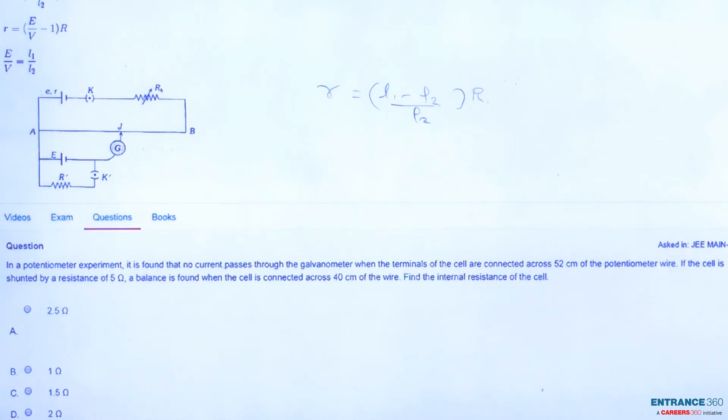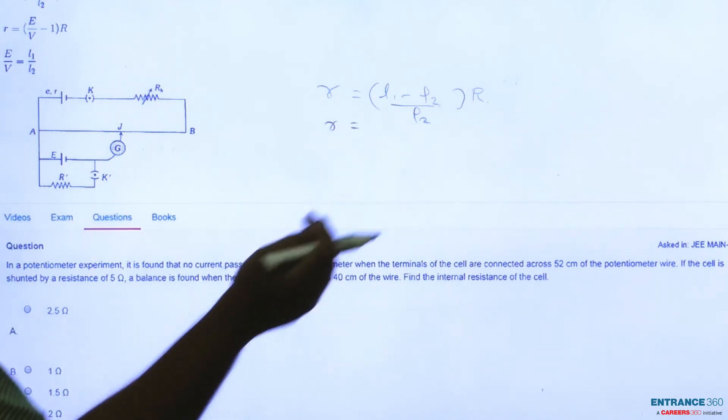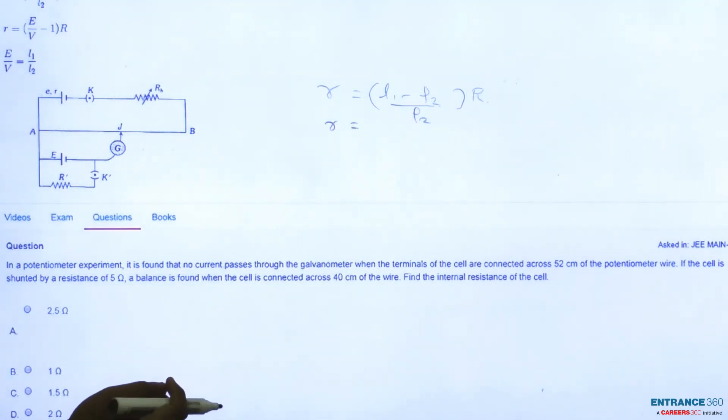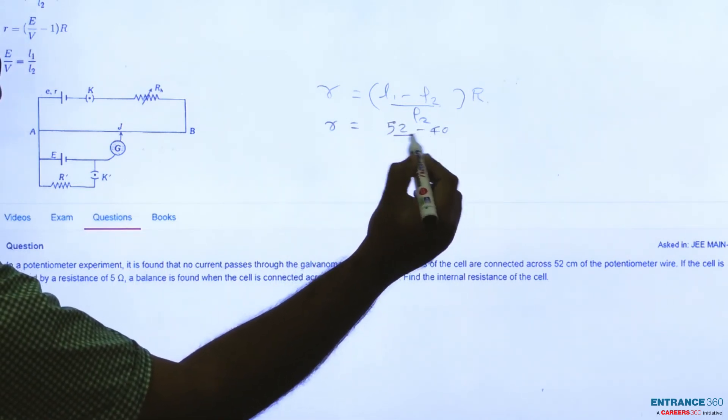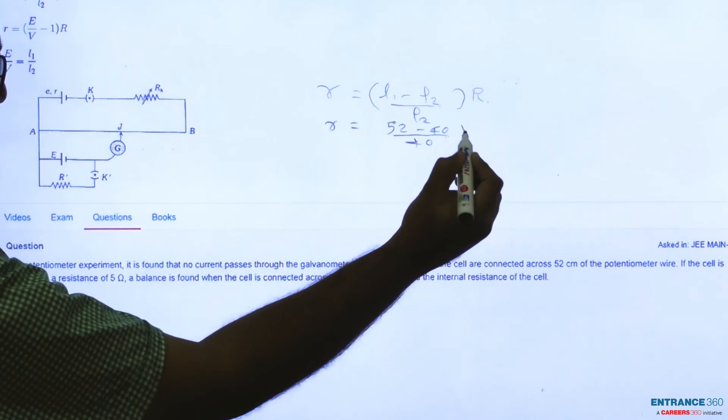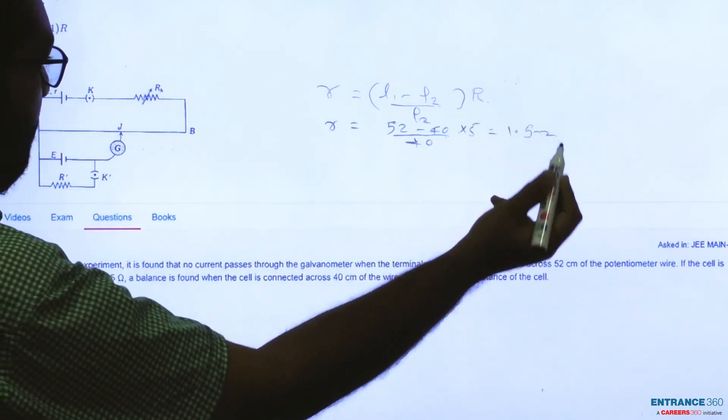Given the value of L1, L2 and R, we can calculate small r as L1 is given as 52, L2 is given as 40, so 52 minus 40 divided by 40 into 5. Upon calculation you will get it as 1.5 ohm.